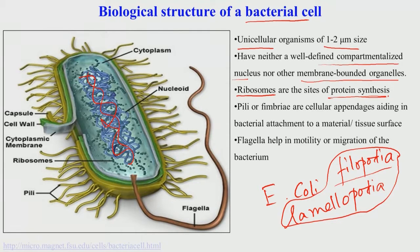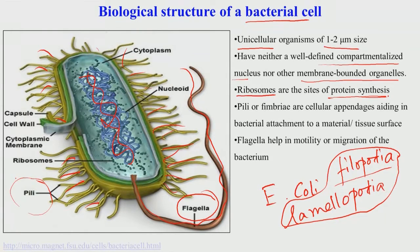In bacteria, there is a certain large tail-like structure known as the flagella. There are also small hair-like structures appearing as outgrowths from the bacterial cell wall or cell membrane, known as pili. Pili and flagella help in bacterial attachment on a biomaterial substrate. The flagella, the longer tail-like structure, particularly helps in bacterial motility.